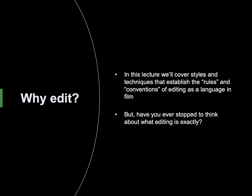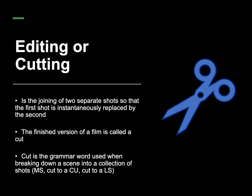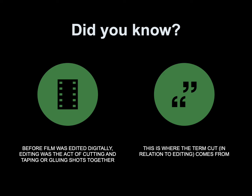Why edit? In this lecture, we'll cover styles and techniques that establish the rules and conventions of editing as a language in film. But have you ever stopped to think about what editing is exactly? Editing, or cutting, is the joining of two separate shots so that the first shot is instantaneously replaced by the second. The finished version of a film is called a cut. Cut is the grammar word used when breaking down a scene into a collection of shots — medium shot, cut to a close-up, cut to a long shot. Before film was edited digitally, editing was the act of physically cutting and taping or gluing shots together. This is where the term cut comes from.